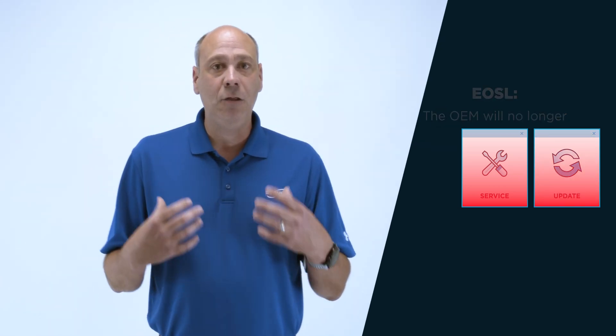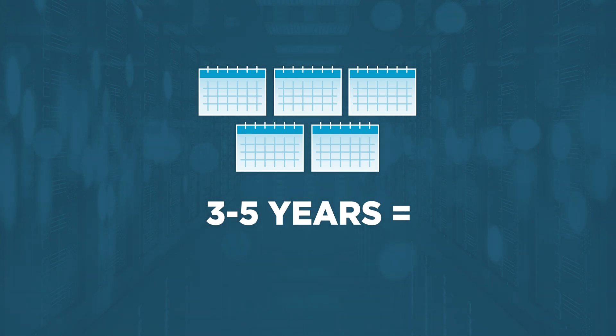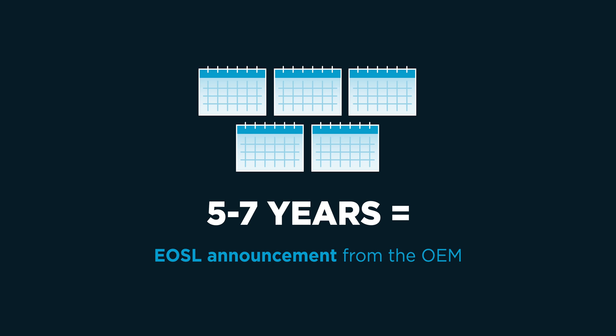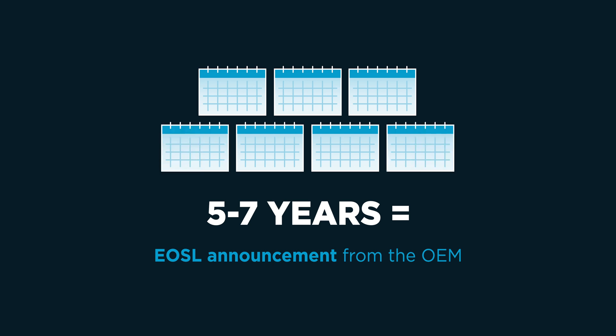That really gets you thinking — what do I do? When do these triggers happen? Think about them like artificial triggers. The OEM picks the dates, they pick the times, and they're designed to induce a little fear in you. EOL usually happens somewhere in that three to five year mark, and EOSL generally happens in that five to seven year time frame. Those times may vary, but that's typically what you see.